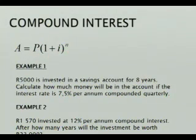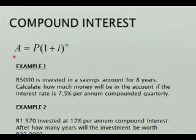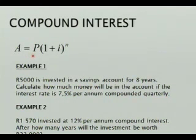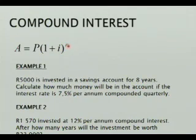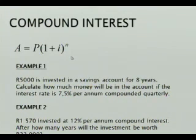What is different? It is to the power of N. A is for the value that you end with. P is your starting value. I is your interest rate. N is for the number of years. I am asking everybody listening to this broadcast to focus.